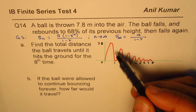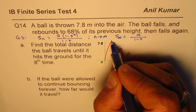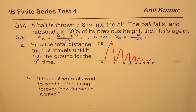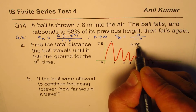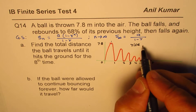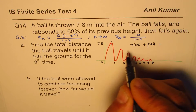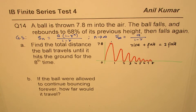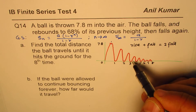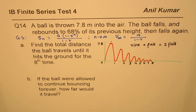We want the total length traveled. You will observe it has two types of lengths: rising and falling. Rise plus fall — and since both are equal, we can say two times the falling distance. So we'll find the length of only the falling portion and multiply by two.